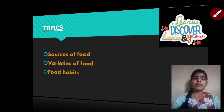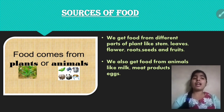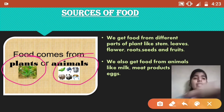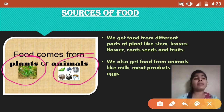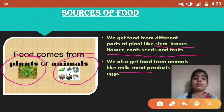Let's start with the first topic: sources of food. Kids, foods come from plants or animals, as you can see in this picture. Food that we get from plants comes from different parts of plants like stem, leaves, flower, roots, seeds, and fruits. We also get food from animals like milk, meat products, and eggs.